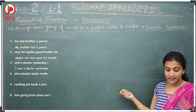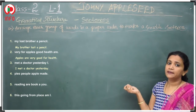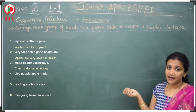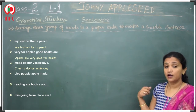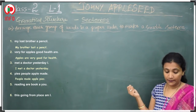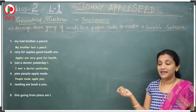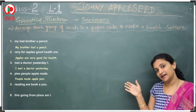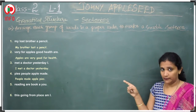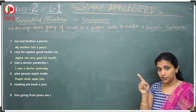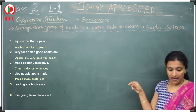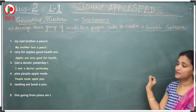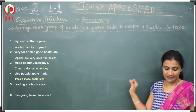Next: 'Pies people apple made.' What did people make? Apple pies. So the correct sentence is 'People made apple pies.' P in 'People' should be capital, and after 'pies' you should give a full stop — that becomes a meaningful sentence.